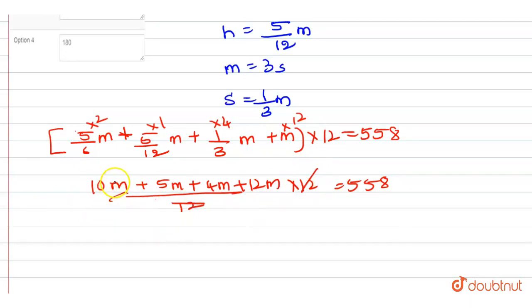And the rest: 10 plus 5 is 15, 15 plus 4 is 19, 19 plus 12 is 31. So 31M equals 558. We get 558 divided by 31 which is equal to 18.